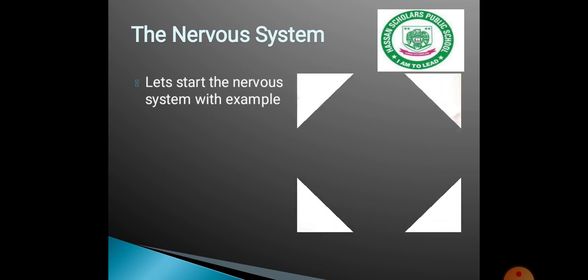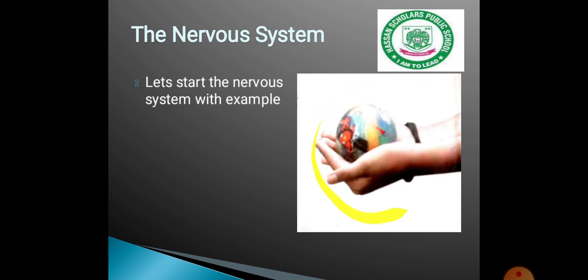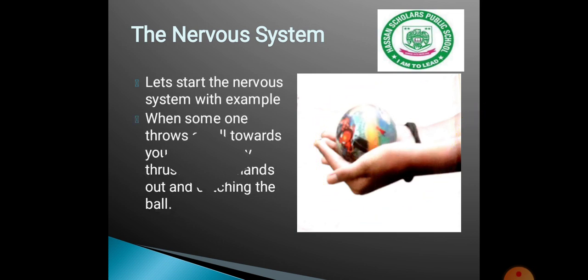Before starting to study the nervous system, let's look at an example. Look at the picture: when someone throws a ball towards you, you can react and try to catch the ball. This is an internal process — your nervous system tells you whether to catch the ball or not. This stimulus can be internal or external, and the nervous system tells you how to react.